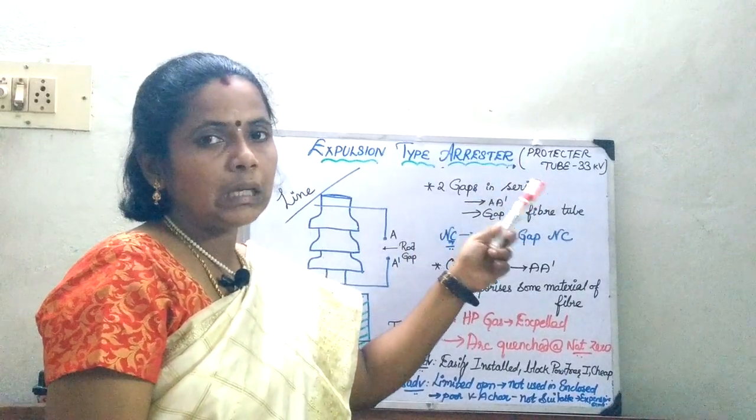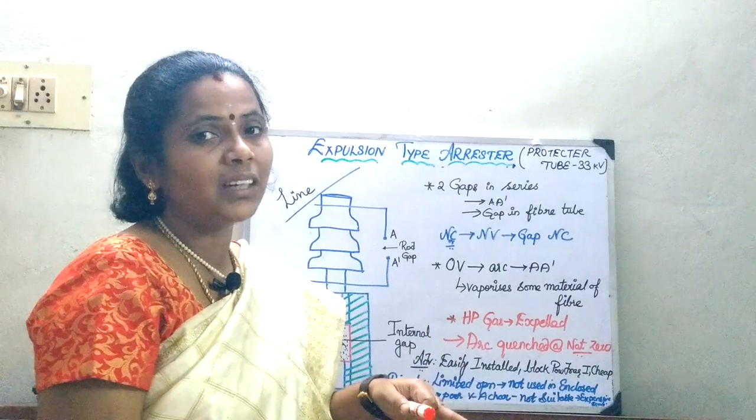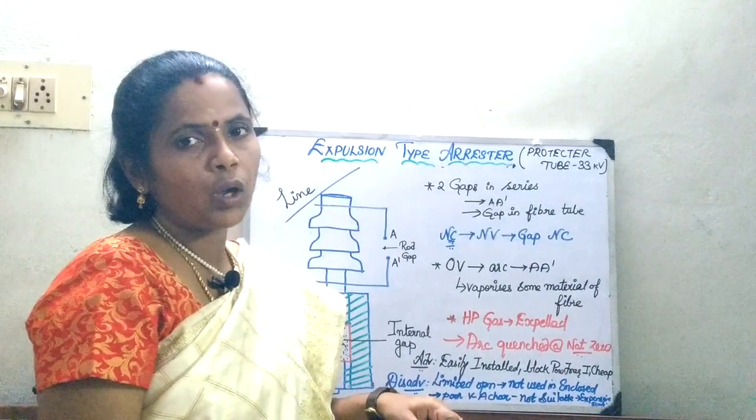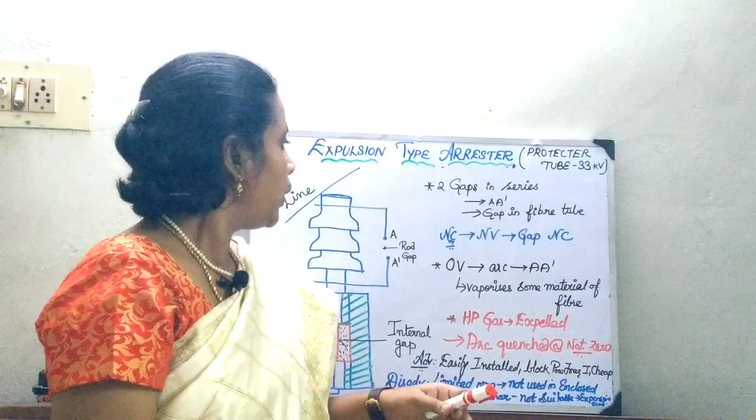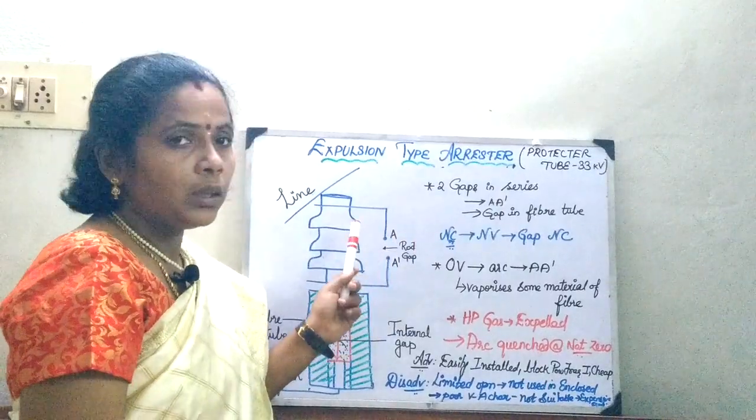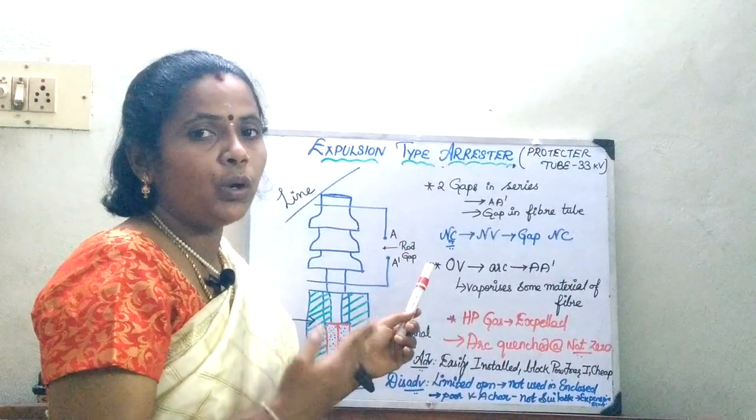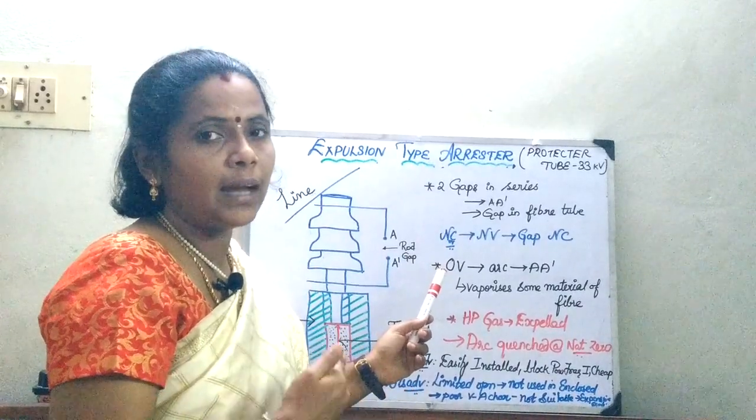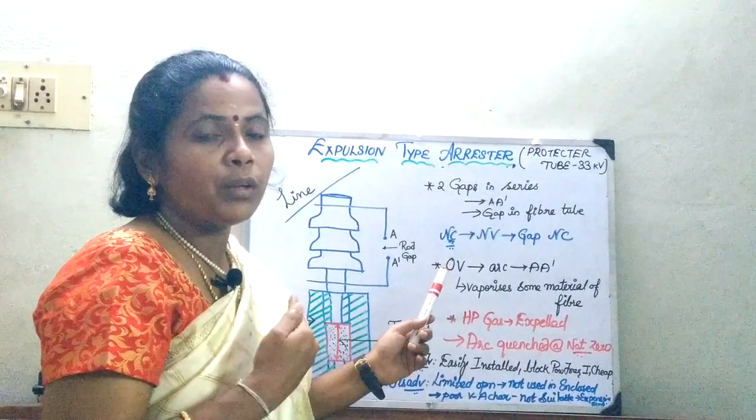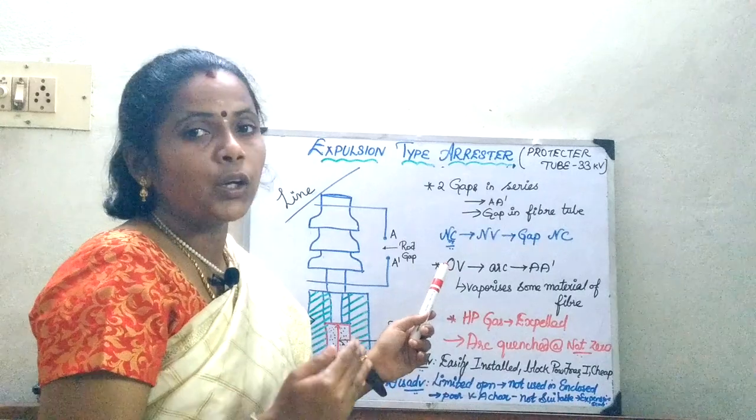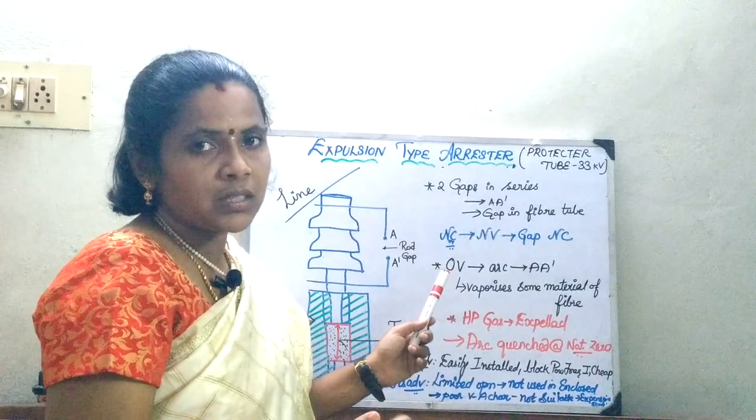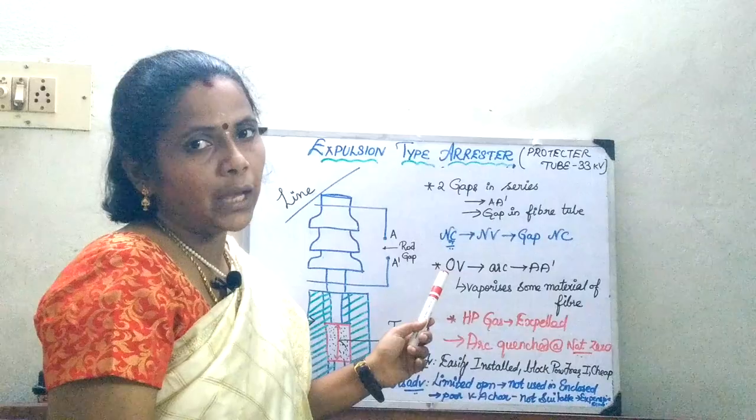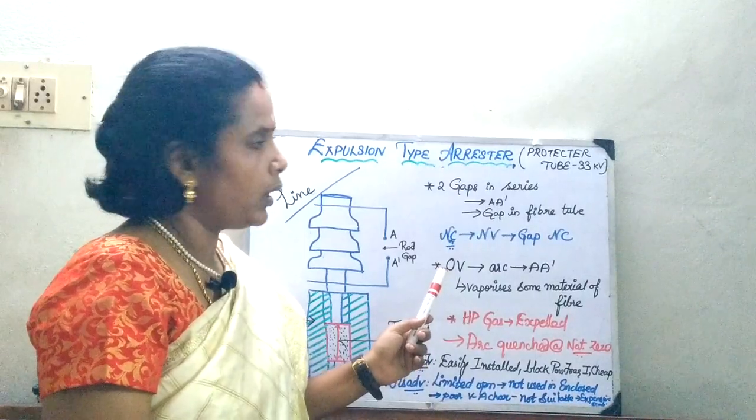This is also used for applications till 33 kV, that is your low voltage applications. Now, what is the distinction you should know - whenever we are going to move from one arrestor to another arrestor, what are the advantages and modifications that has been done in order to improvise the lightning arrestor so as to discharge the high voltages to the ground.